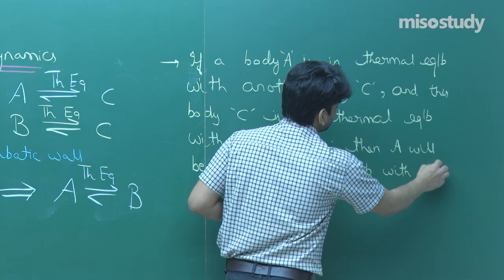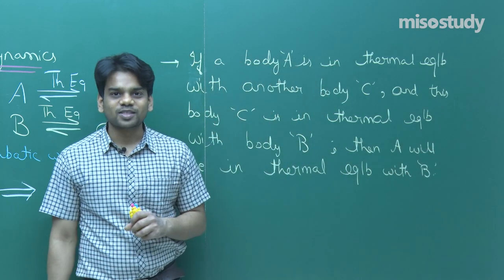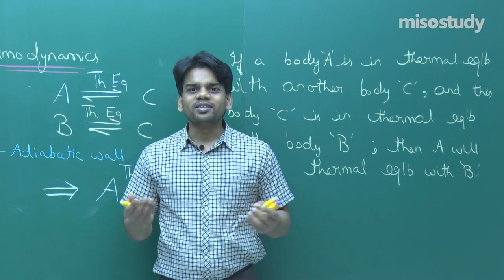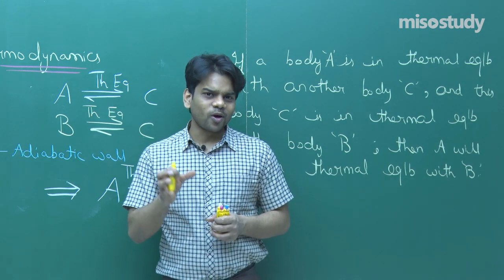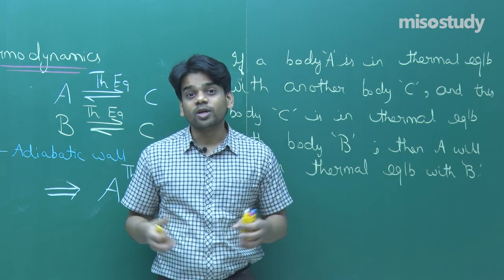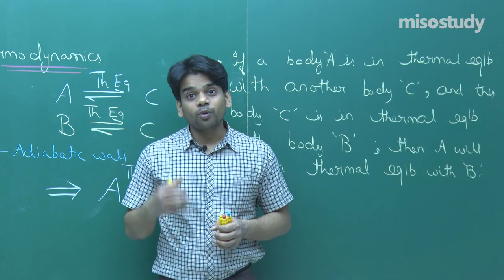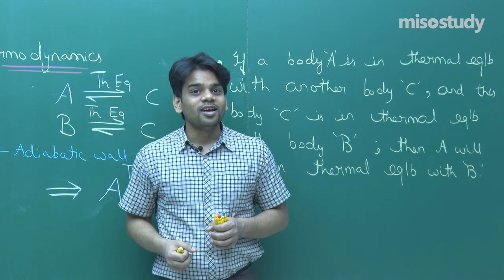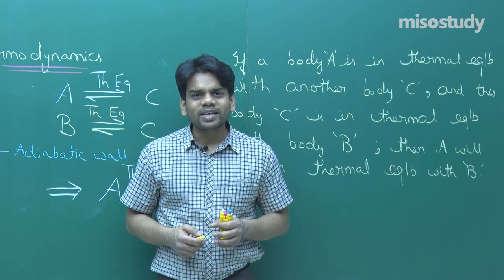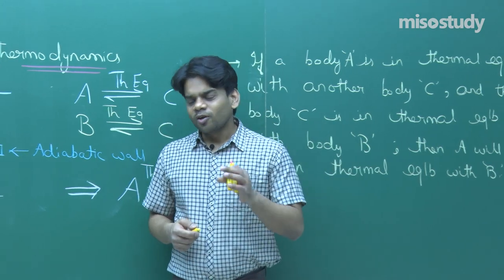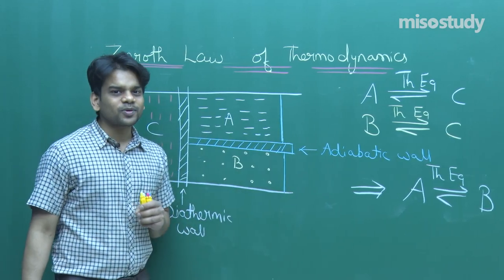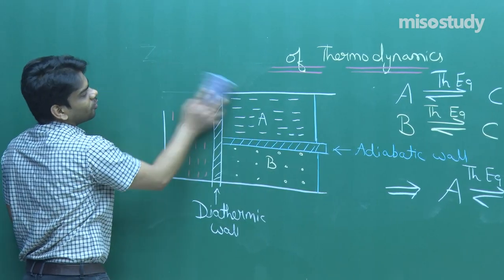Zeroth law is not too tough to understand — it is a very basic law of nature. You can understand the same thing at home: if you take two bodies at different temperatures and join them, both reach thermal equilibrium. And if one body is in thermal equilibrium with a third body, and the second is also in thermal equilibrium with that third body, those two bodies will automatically be in thermal equilibrium with each other.